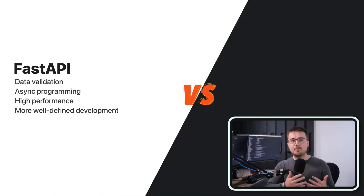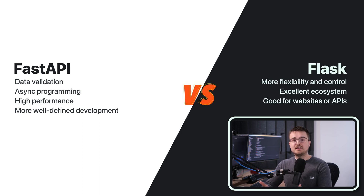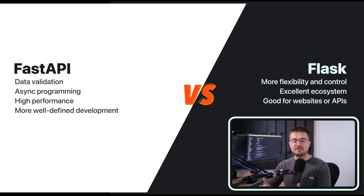FastAPI is a little bit more batteries included — it comes with some excellent data validation libraries and it suggests some ways of writing your code that Flask just doesn't. Flask gives you more flexibility and it has a brilliant ecosystem so you can do whatever you want, but you can also make some mistakes if you're not as experienced. I normally recommend FastAPI for a specific type of API project that is well-defined and also for newer developers, and Flask for more greenfield projects, more exploratory projects, and for more advanced developers.